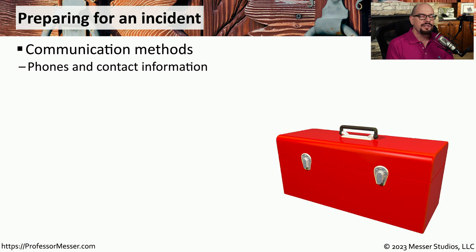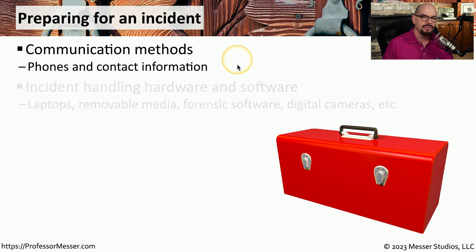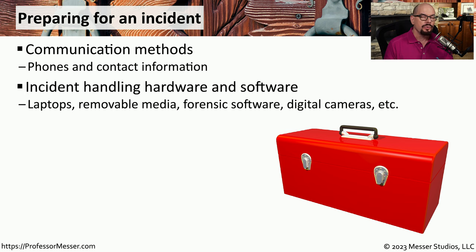Before an incident even occurs, there is a great deal of planning that takes place. One of the things you should have available is a list of communication methods. There should be an up-to-date contact list with all of the people who should be informed when an incident occurs. You also want to have an incident go bag, where you have all of the hardware and software required to address any type of incident.